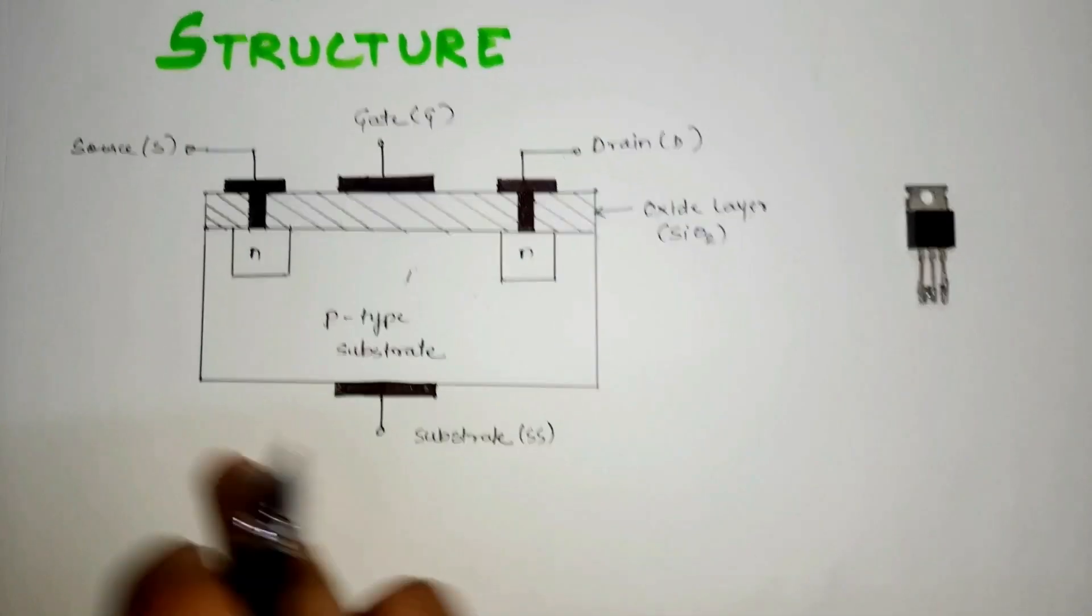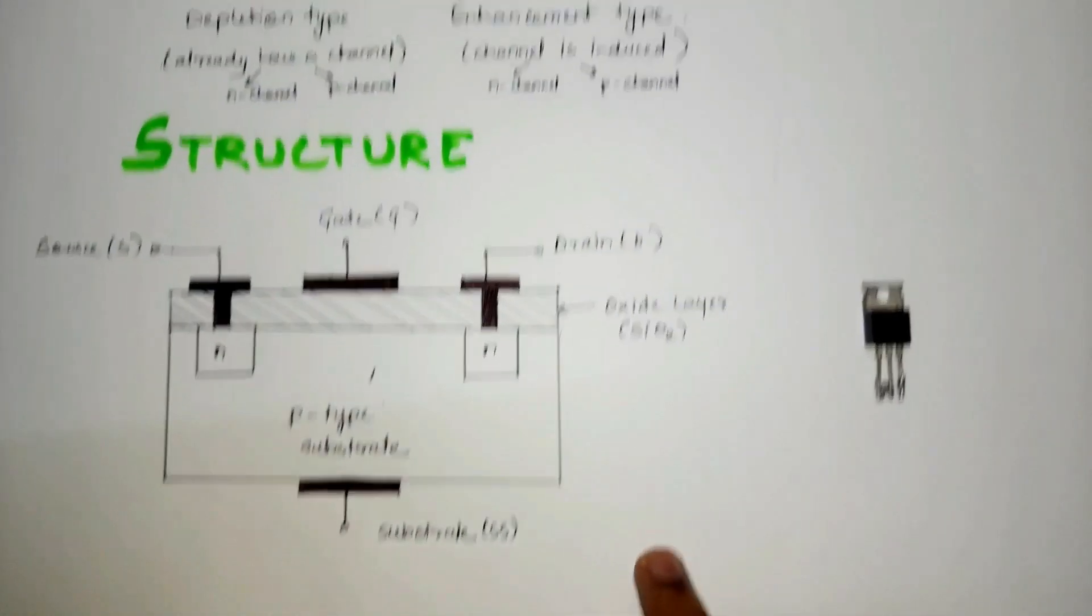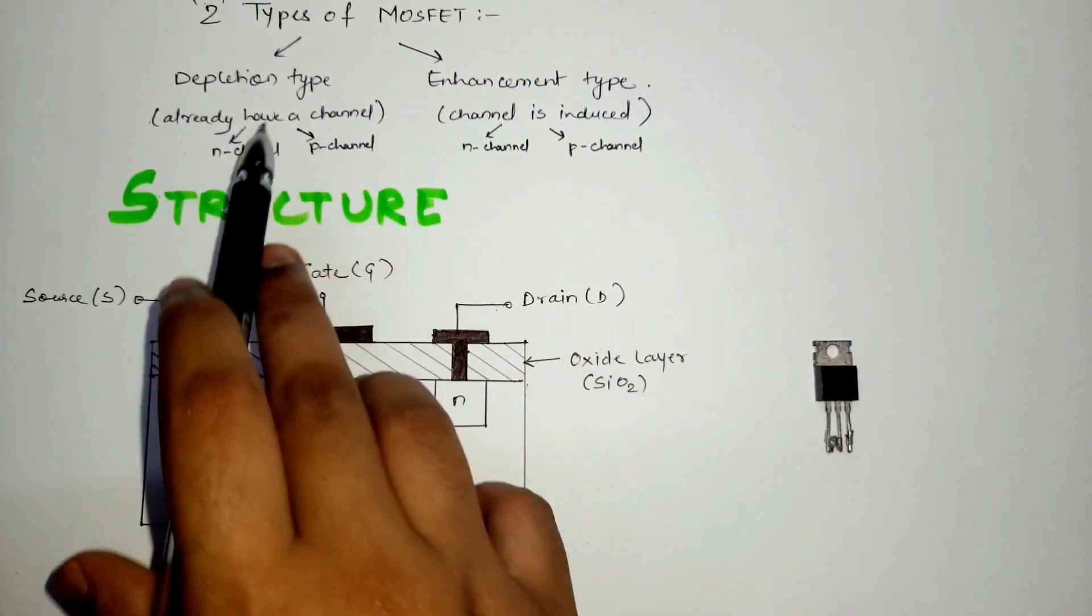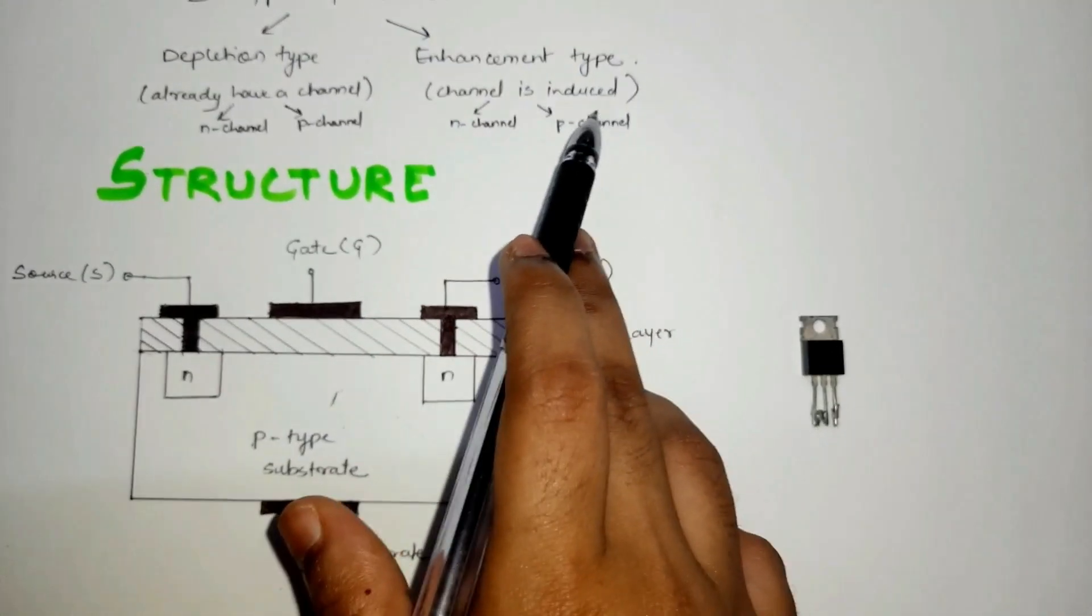Coming to the structure, this is an N-channel enhancement type MOSFET. In previous slides, we saw there are two types of MOSFET: depletion type and enhancement type. In depletion type, you already have a channel, and in enhancement type, the channel is induced or generated.